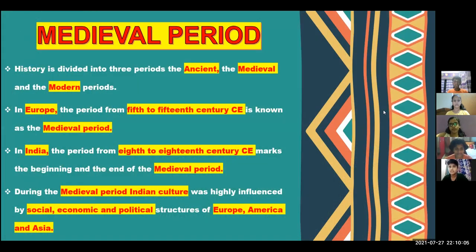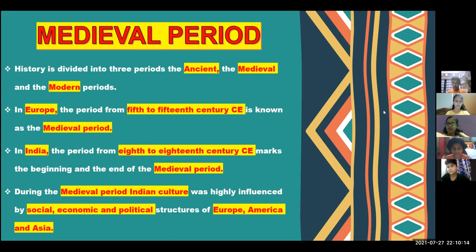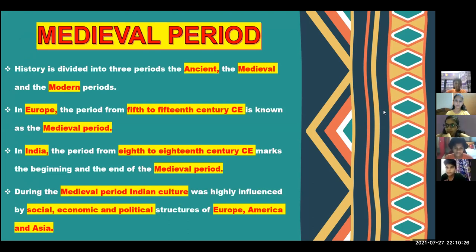This is a short overview of the medieval period. History is divided into three periods: the ancient, the medieval and the modern period. In Europe, the period from the 5th to 15th century is known as the medieval period. In India, the period from the 8th to 18th century marks the beginning and the end of the medieval period.